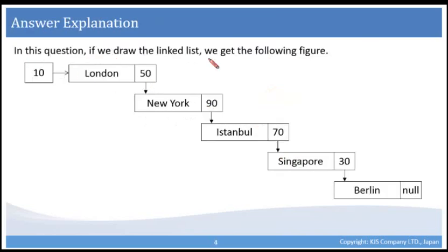In this question, we are going to draw the linked list as follows. 10 points to London, so here 10 points to London, as London is saved in address 10.